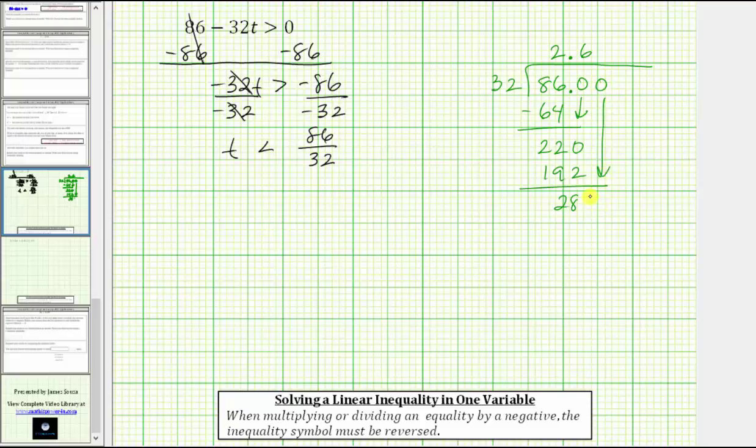Add another zero, bring it down. Determine how many 32s are in 280, which is eight. Eight times 32 equals 256. We subtract. The difference is 24. At this point, we need to keep going because we're asked to round to two decimal places. We need one more decimal place in the quotient. So we add another zero, bring it down, and determine how many 32s are in 240, which is seven. Seven times 32 equals 224. We subtract, and the difference is 16. And now we can stop.